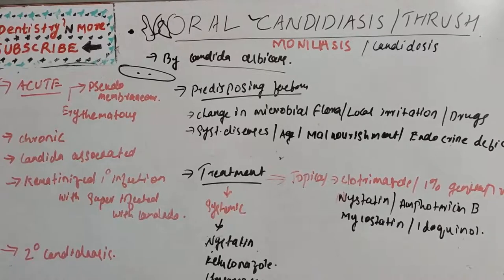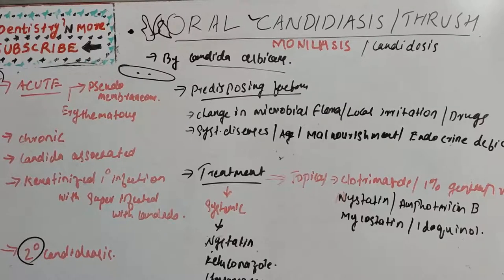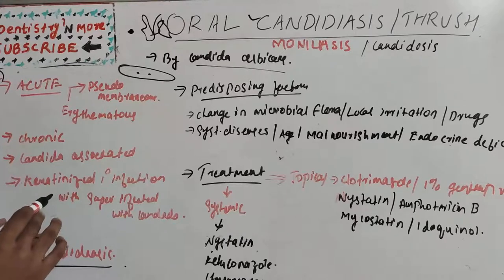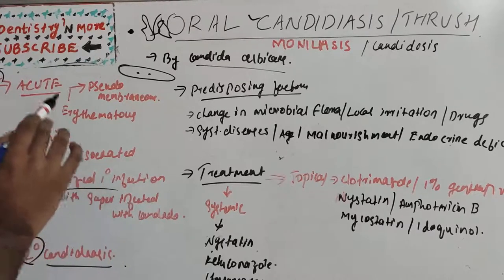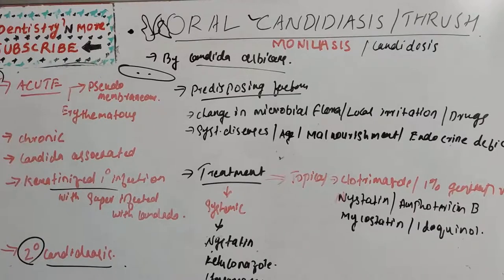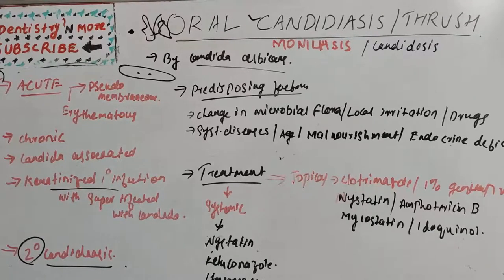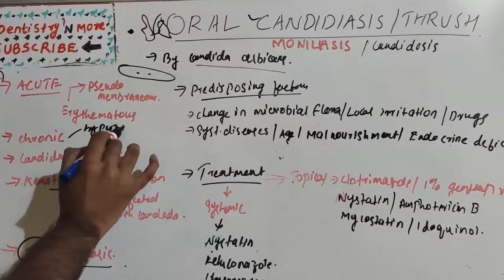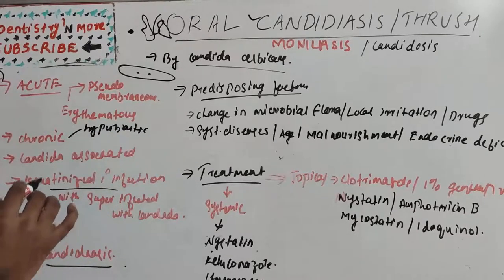Oral candidiasis is classified as primary and secondary. Secondary candidiasis is a manifestation of systemic mucocutaneous candidiasis, such as thymic aplasia and candido-endocrinopathy syndrome. Primary oral candidiasis includes acute type, chronic candida-associated lesions, and keratinized primary lesions with superinfected candida. Under acute candidiasis we have pseudomembranous and erythematous; under chronic we have hyperplastic, erythematous, and pseudomembranous forms.